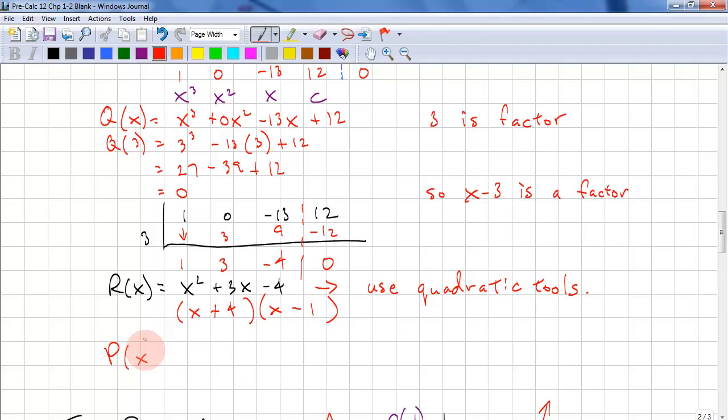P(x), fully factored, is (x + 2)(x - 3)(x + 4)(x - 1).